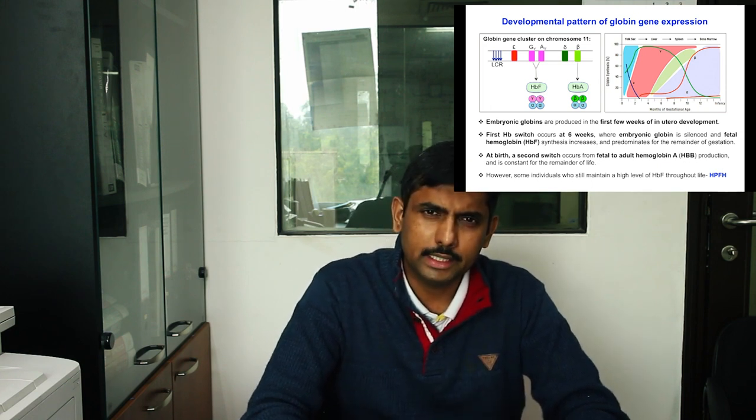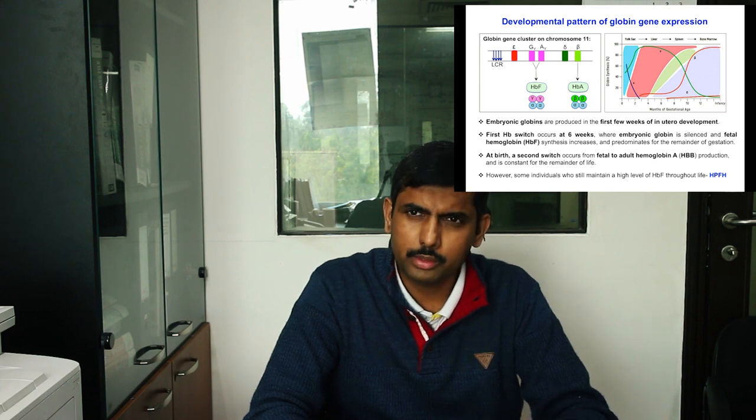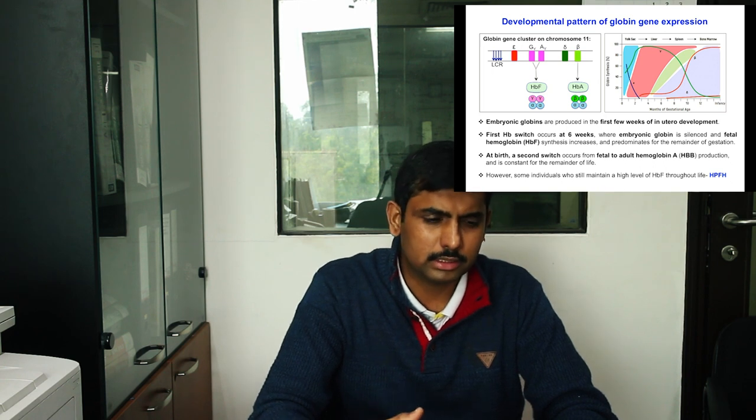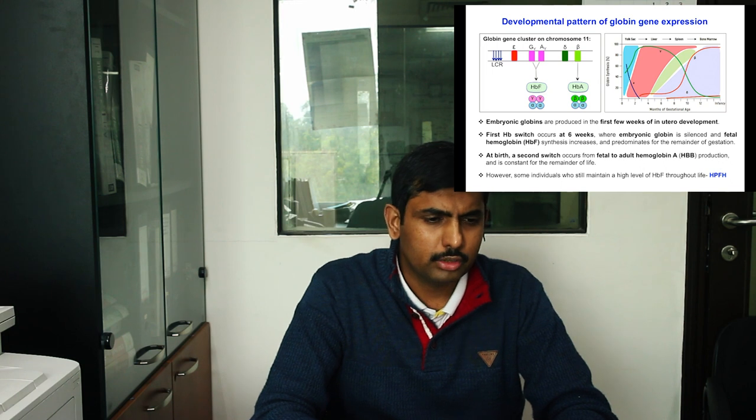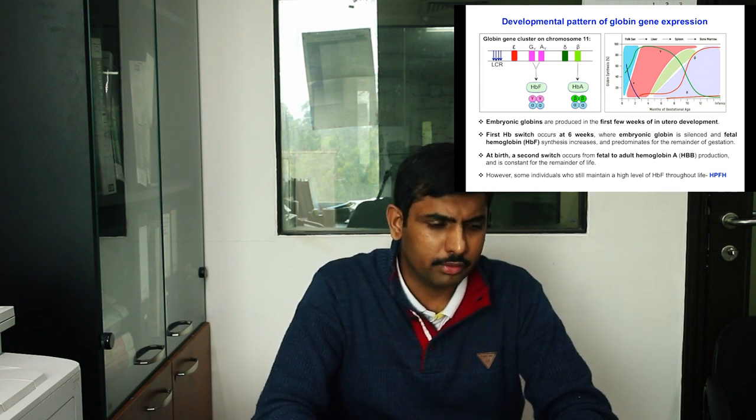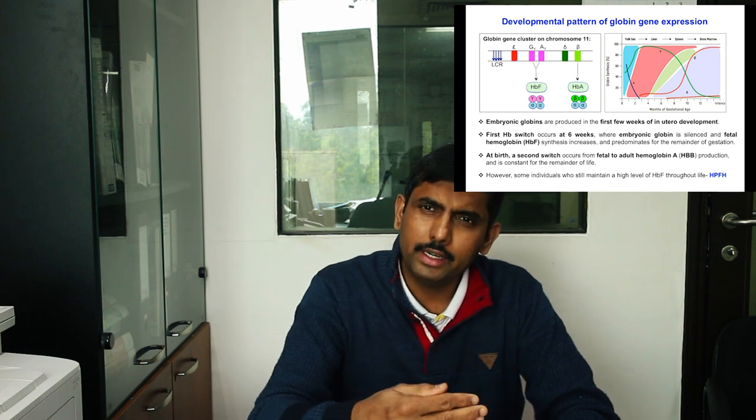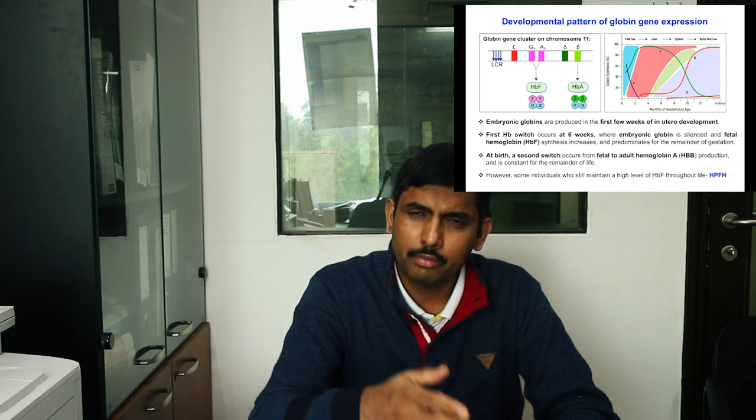Before going into the details, I will give a brief introduction about the developmental pattern of globin gene expression. In the beta-globin gene cluster on chromosome 11, there are 5 genes — from embryonic, then fetal, delta and beta. The embryonic globulins are produced in the first few weeks of utero development. After that, the first switch occurs at 6 weeks where embryonic globulin is silenced and fetal hemoglobin synthesis starts, predominating for the remainder of gestation. At birth, the second switch happens from fetal to adult hemoglobin, which continues for the remaining period of life.